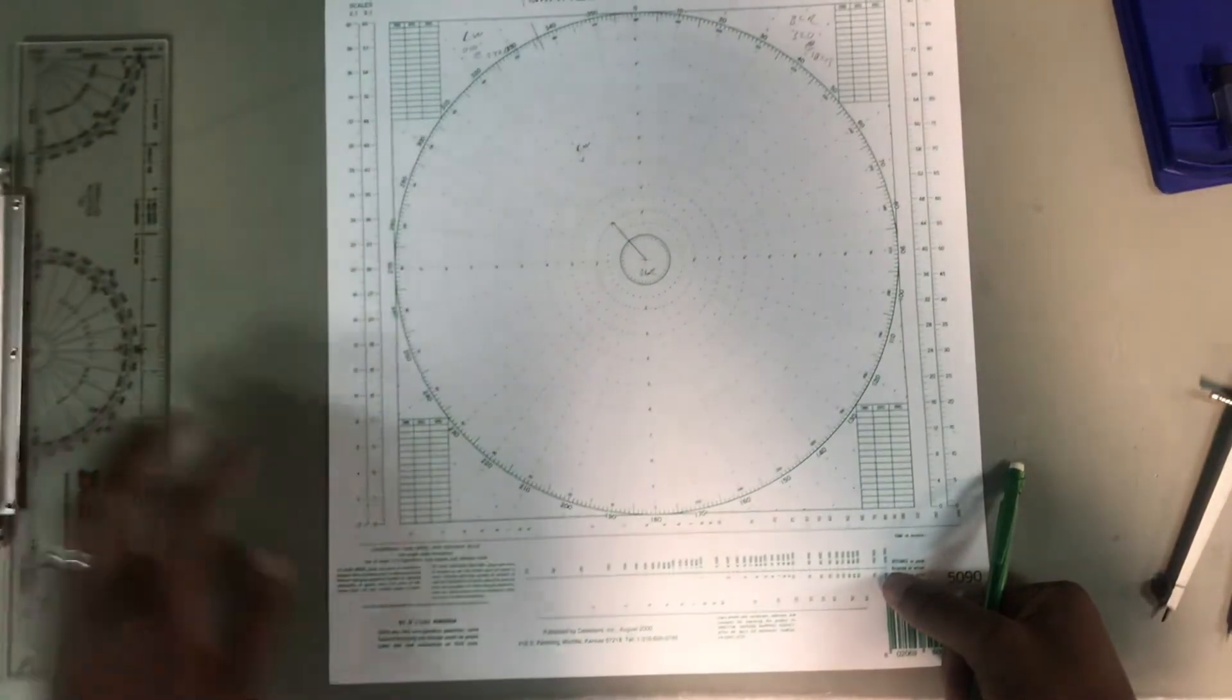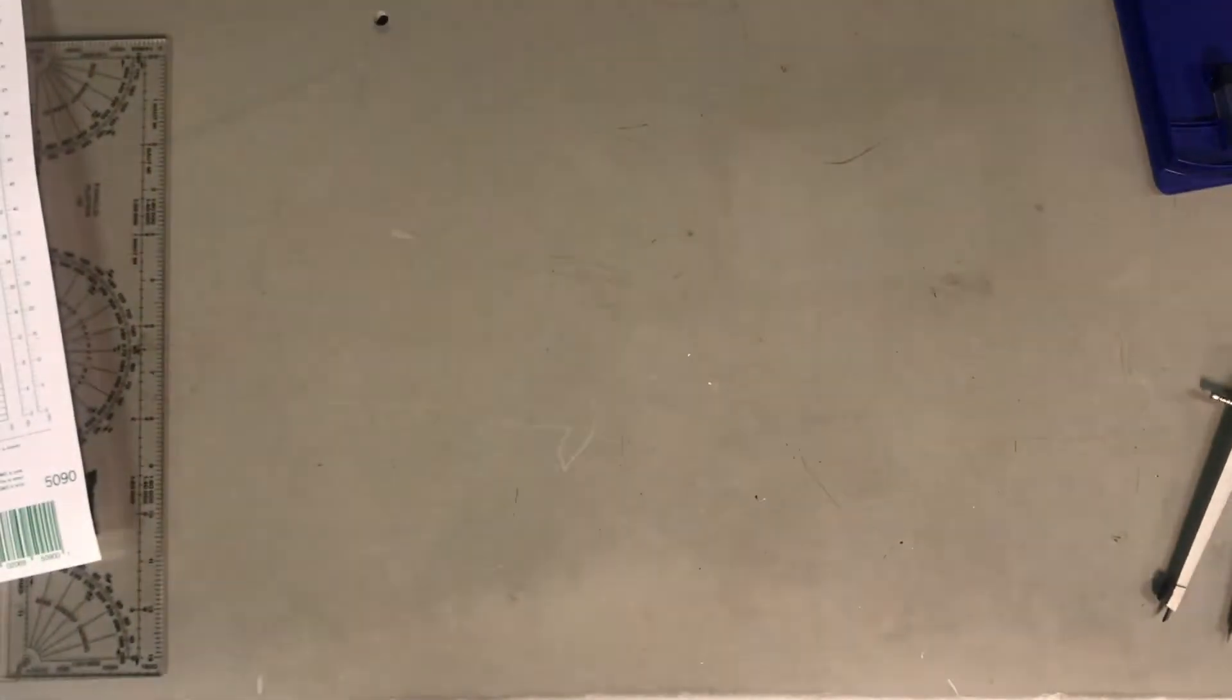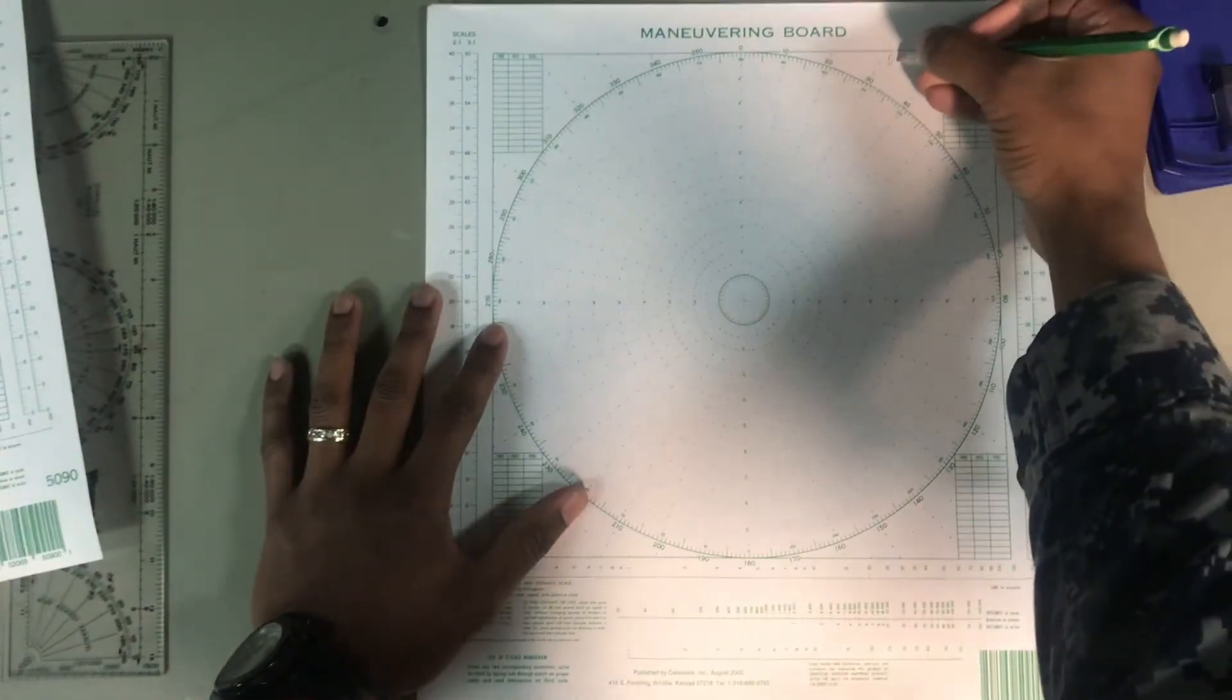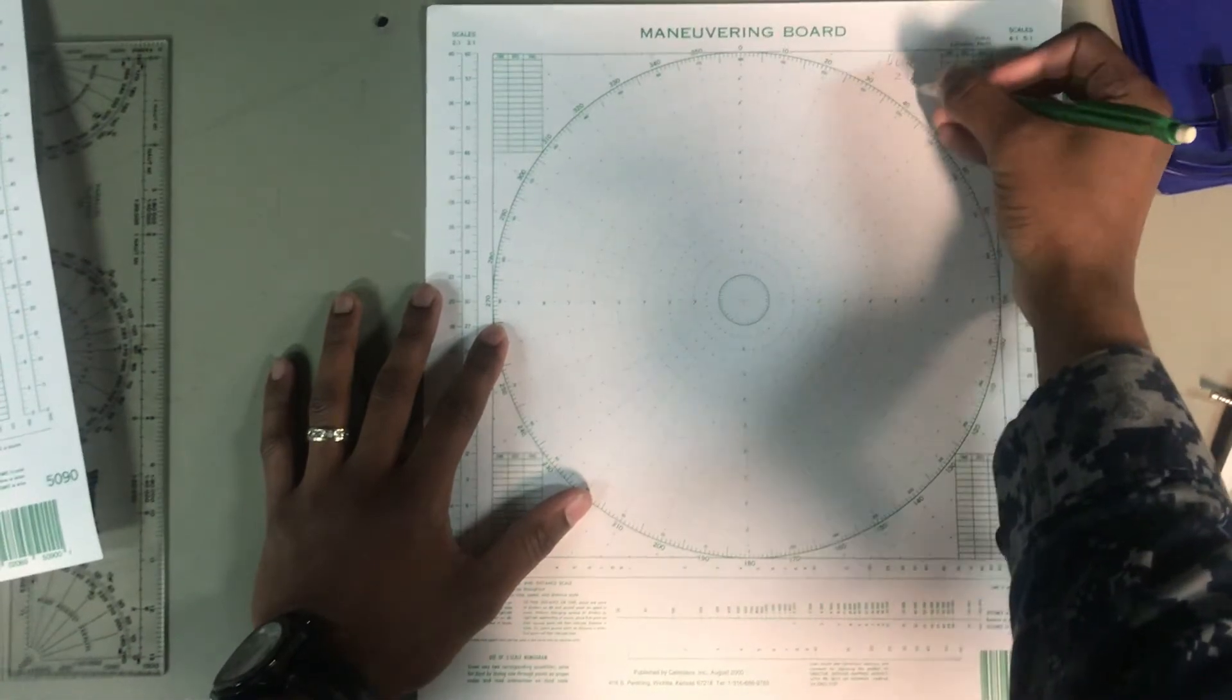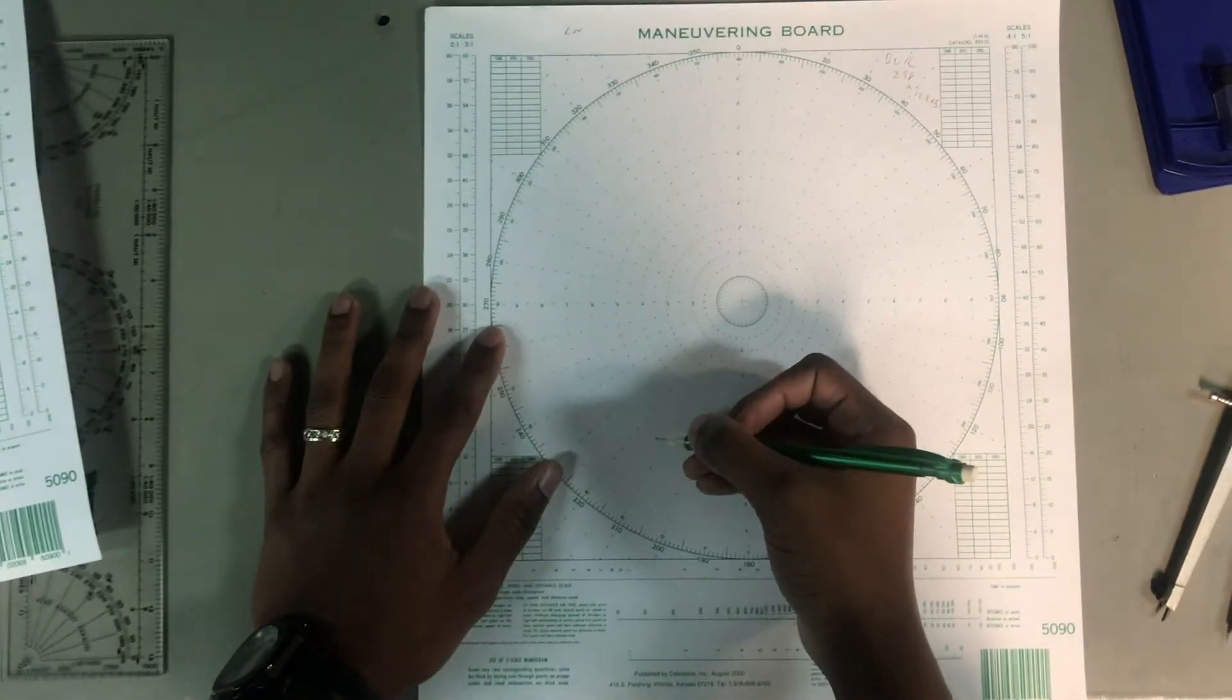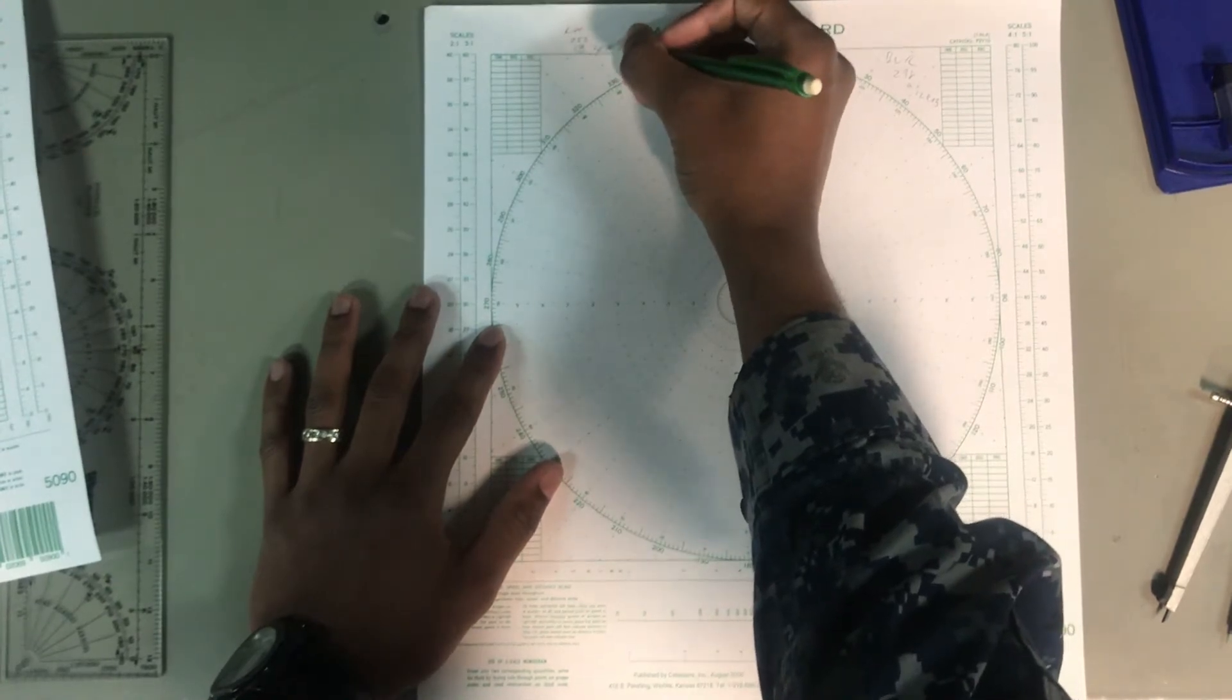If you thought that was kind of fast, we'll do another one. Just to make sure you got the grasp. Alright. So here's a new mo board. So this time, Blue Ridge is on course, we'll say, 298 at 12 knots. Relative winds are, let's say, 050, at 28 knots.